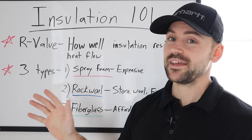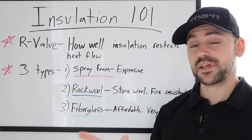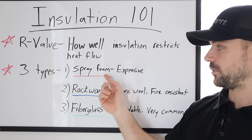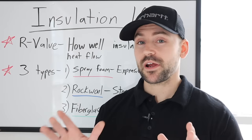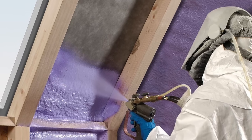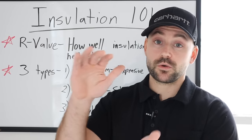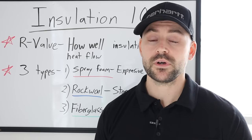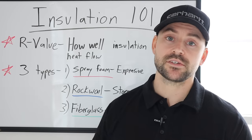Now that we understand what the R value is, there are three common types of insulation you'll see in modern building. First is spray foam insulation — that's going to be the most expensive and arguably the best insulation. It's two compounds joined together to make a polyurethane foam, and it's very sticky when wet. People spraying it are decked out in a suit, goggles, and respirator because it's very toxic to breathe in. You can also get small cans of it at Lowe's or Home Depot to spray around windows, doors, or cracks. The bulk product works the same way inside wall cavities.